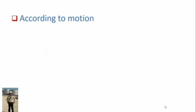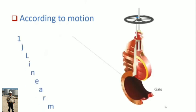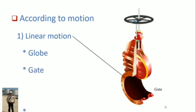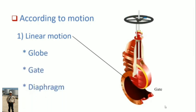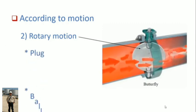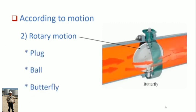Second way is according to motion. First we have linear motion. Under linear type we have globe, gate, and diaphragm. Second one is rotary motion. Under rotary type we have plug, ball, and butterfly.